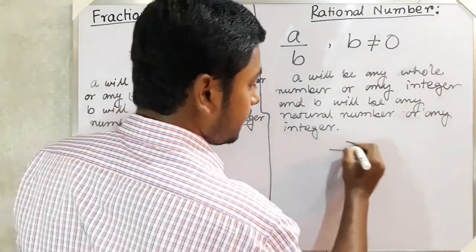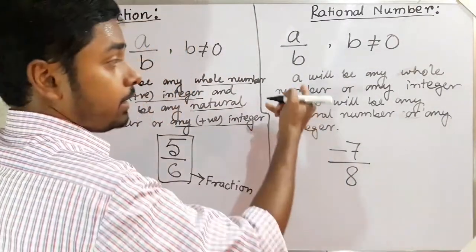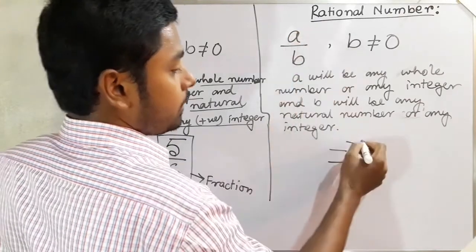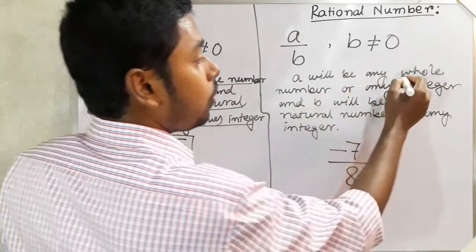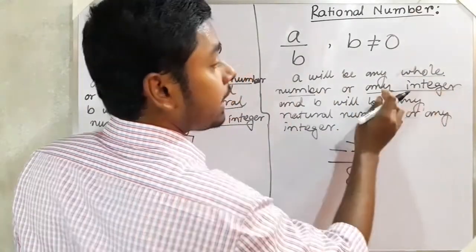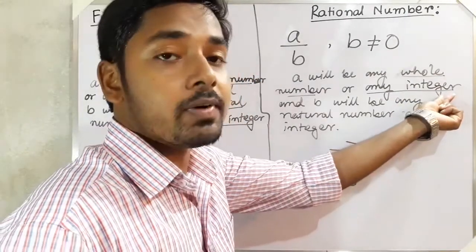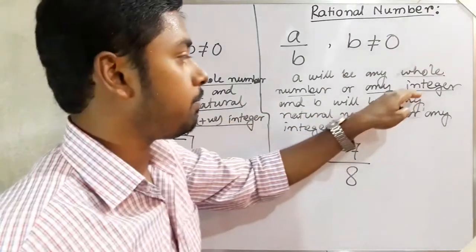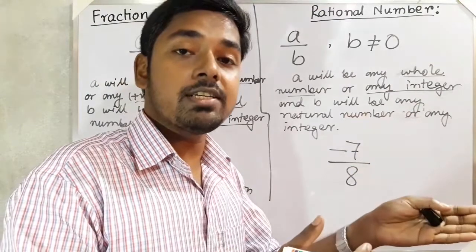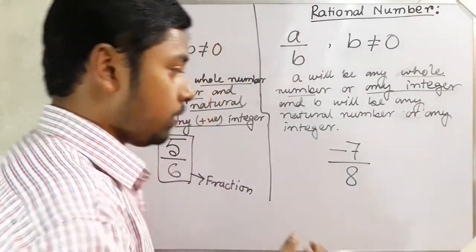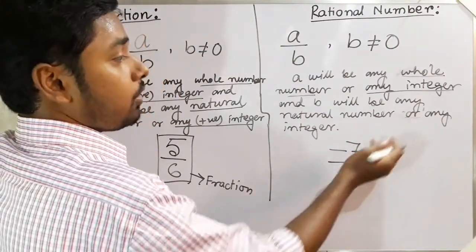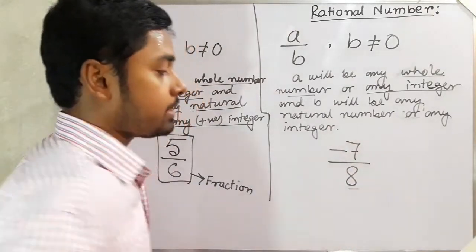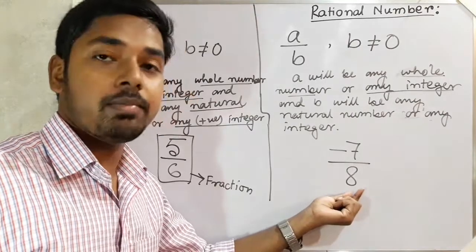Now suppose I write −7/8. What about it? In a rational number, the numerator a can be any whole number or any integer. Any integer means it may be positive or negative. Here −7 is a negative integer. And b = 8 is a natural number.